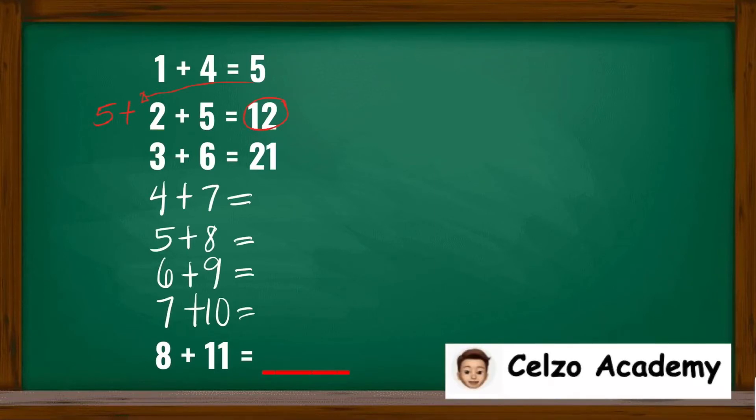For the third line, to get the answer 21, it's 3 plus 6 is 9, and then adding the previous answer, 12. So 12 plus 3 is 15, 15 plus 6 is 21.